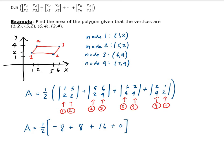Again, you're taking the determinant of each one of these. This is giving us -8, this is giving us 8, this is giving us 16, and this is giving us 0. Then we just have to simplify this. The area is 1/2 times 16, which is going to give us 8 unit squared.